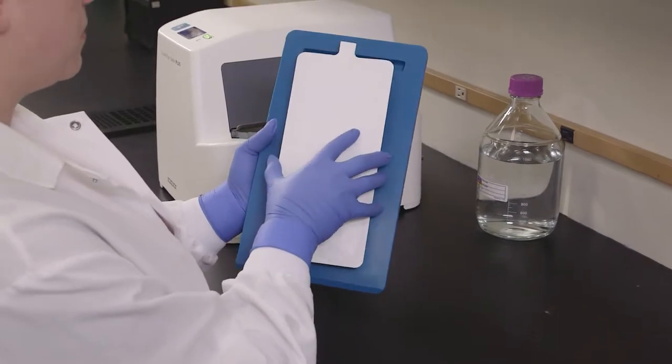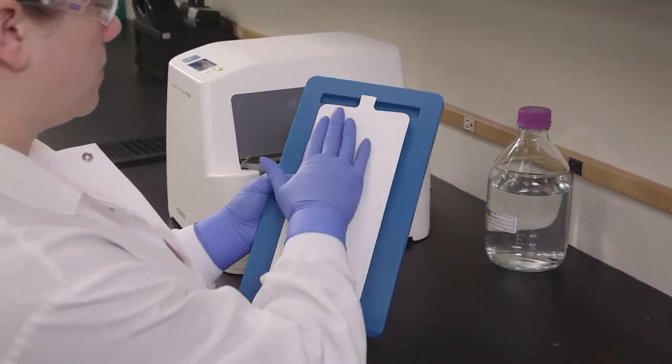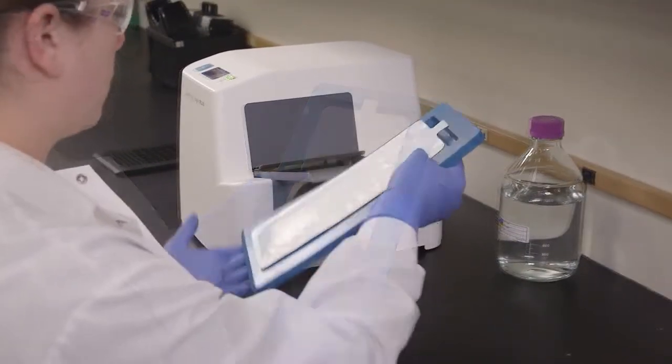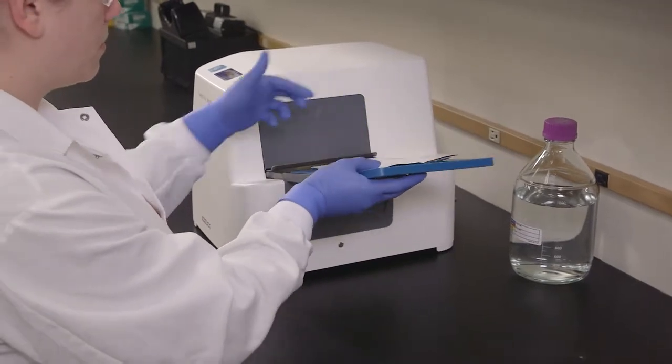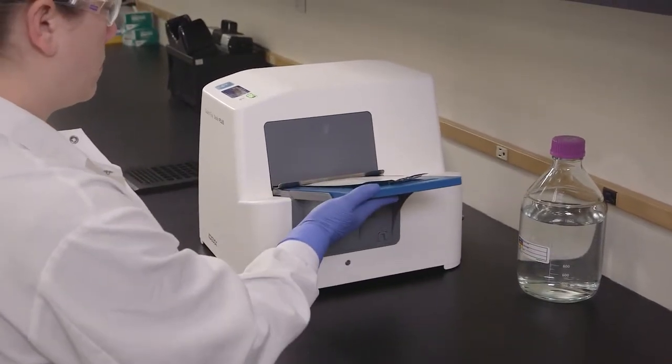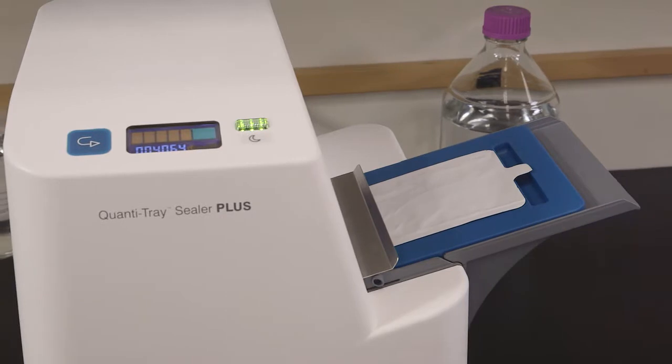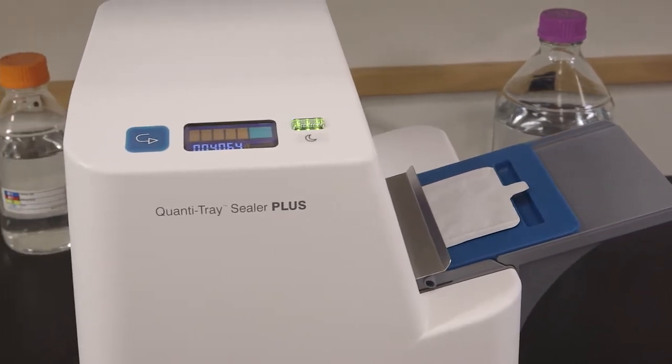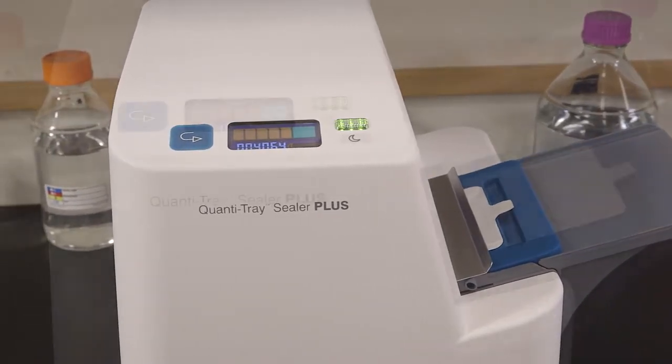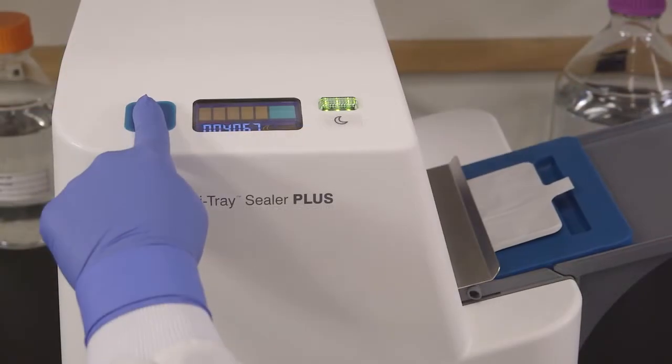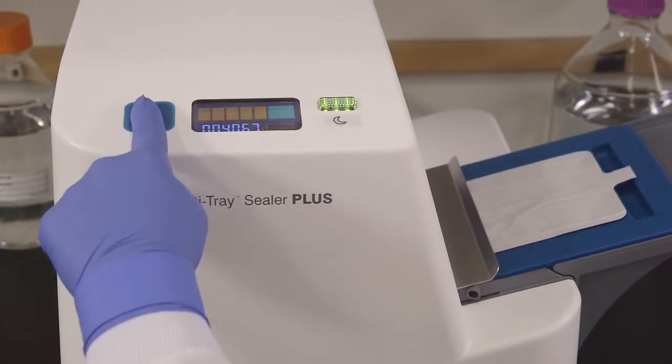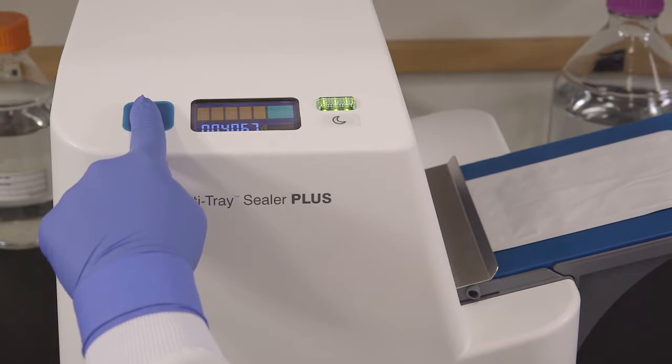Place the filled QuantaTray on the rubber insert making sure each well fits its corresponding hole. Push the insert with tray into the sealer until the sealer grabs the tray and pulls it into the slot. If you need to reverse the motor, press and hold the reverse button. However, do not reverse the motor if the rubber insert is completely inside the sealer.